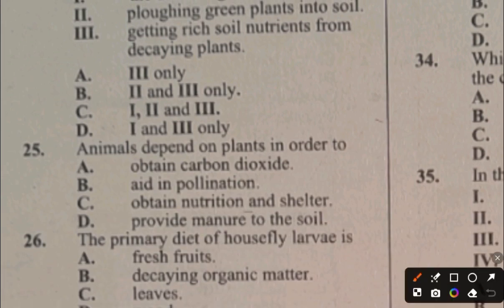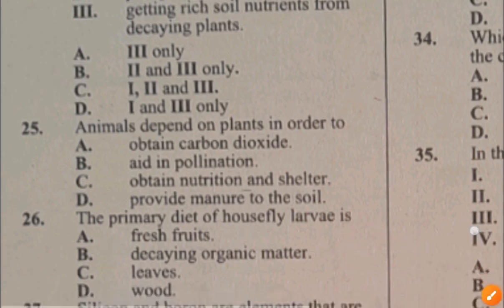Question 25. Animals depend on plants in order to: A. Obtain carbon dioxide, B. Aid pollination, C. Obtain nutrition and shelter, D. Provide manure to the soil. The answer to question 25 is C, obtain nutrition and shelter.